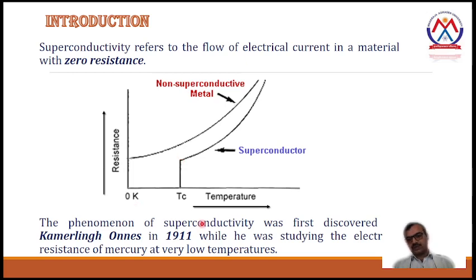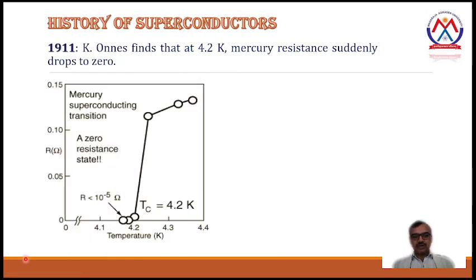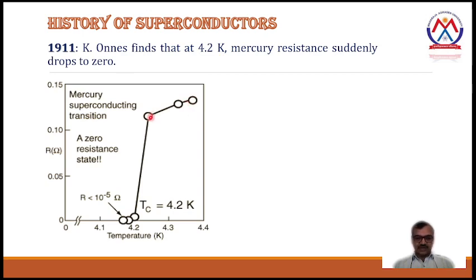The phenomenon of superconductivity was first discovered by Kamerlingh Onnes in 1911, while he was studying the electrical resistance of mercury at very low temperatures. In 1911, Kamerlingh Onnes found that at 4.2 Kelvin, mercury's resistance suddenly drops to zero. As you can see in this graph, as the temperature decreases and comes near to 4.2 Kelvin, its resistance suddenly drops to a very lower value of 10 raised to power minus 5 ohms.